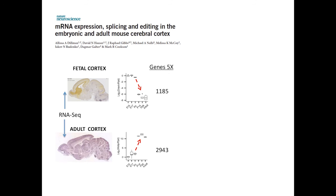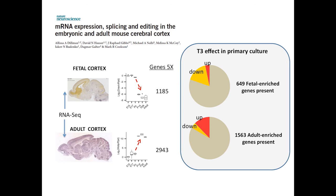To finish, we also analyzed what effect thyroid hormone has during development from the transition from the fetal cortex to adult cortex. It has been demonstrated that in this transition, there are genes that are down-regulated and genes that are up-regulated. Looking at the transcriptome and how thyroid hormone affects these genes in the primary culture, we found that T3 down-regulates most fetal-enriched genes and up-regulates only a few of them. And from the adult-enriched genes, T3 up-regulates most of them but down-regulates some.